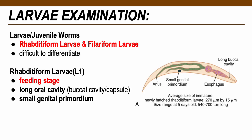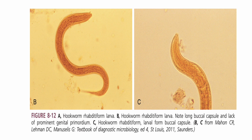Hookworm larvae have two forms: rhabditiform larva and filariform larva. Larval forms also cannot be differentiated by species. Rhabditiform larva is the feeding stage present in soil, with a long oral cavity to facilitate feeding and a small genital primordium since this is not the sexual stage. Filariform larva (L3) is the non-feeding infective stage with a shorter esophagus than rhabditiform larva but with a pointed tail.